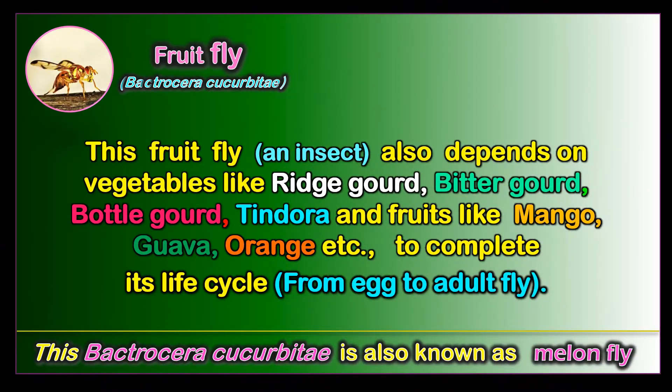This fruit fly also depends on vegetables like ridge gourd, bitter gourd, bottle gourd, and tindora, and fruits like mango, guava, orange, etc., to complete its life cycle.